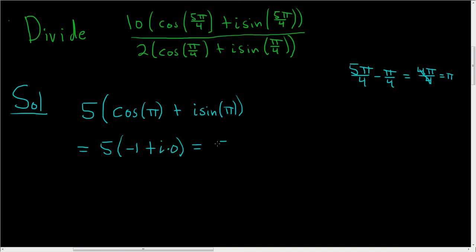So this is just 5 times negative 1 plus 0. So the answer is just negative 5. So whenever you're dividing complex numbers like this in trig form all you do is subtract the angles. I hope that made sense.